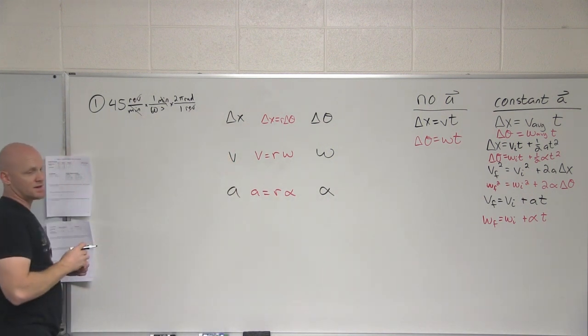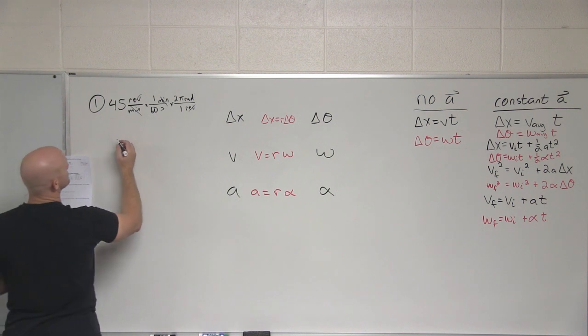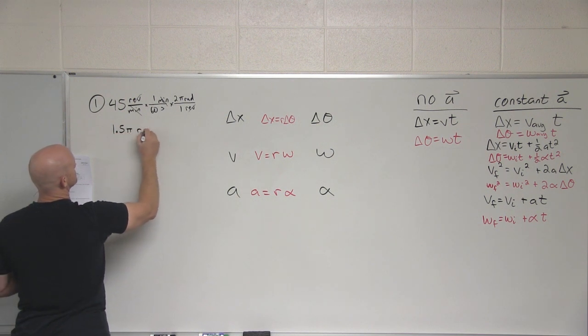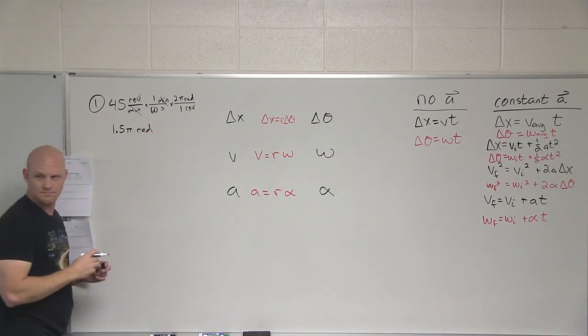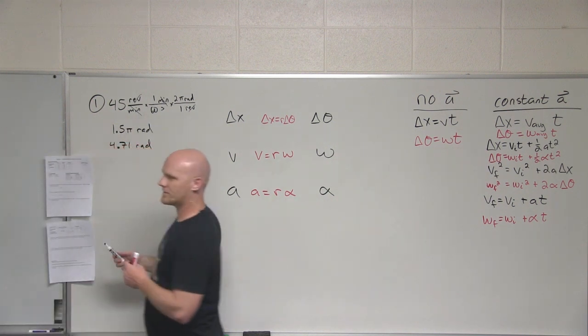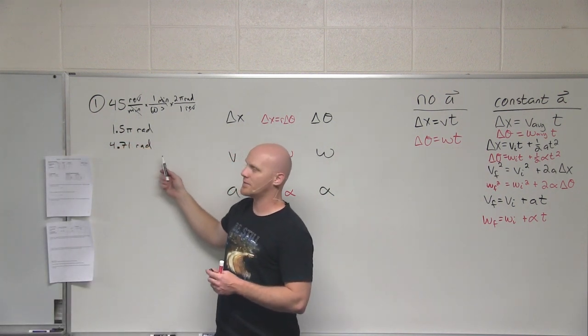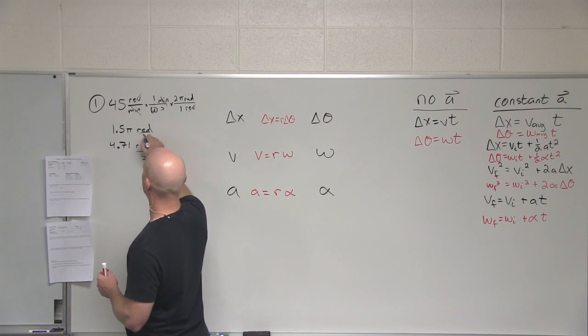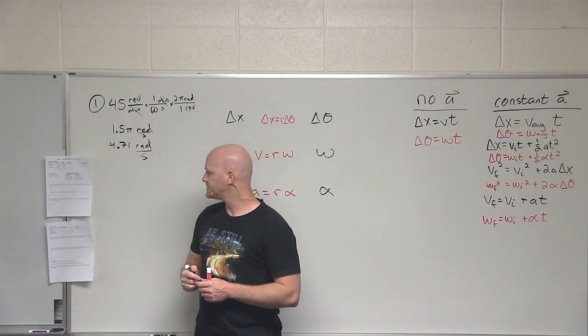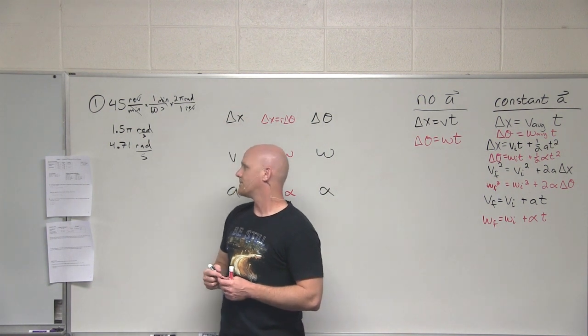Anybody get me an answer here on this? 4.71 radians per second. Cool. You multiply the pi through? Yeah. 4.71 radians per second. Cool. I left it with pi there, because I'm not going to do that in my head, but 4.71 radians per second. That's your omega, your angular velocity.